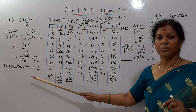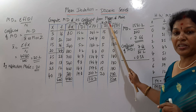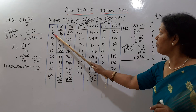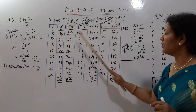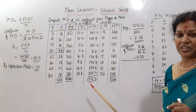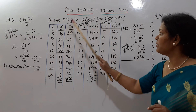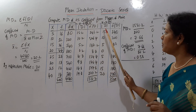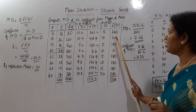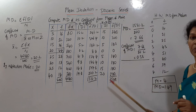Once mode is identified, we calculate mod d = x minus z, where z = 20. So: 5 minus 20 = 15, 10 minus 20 = 10, and so on. Then frequency into mod d: 16 into 15 = 240, 32 into 10 = 320, and so on. The total of f into mod d is 1520.